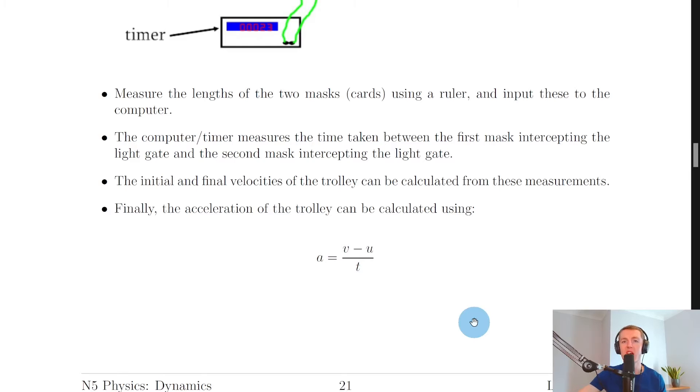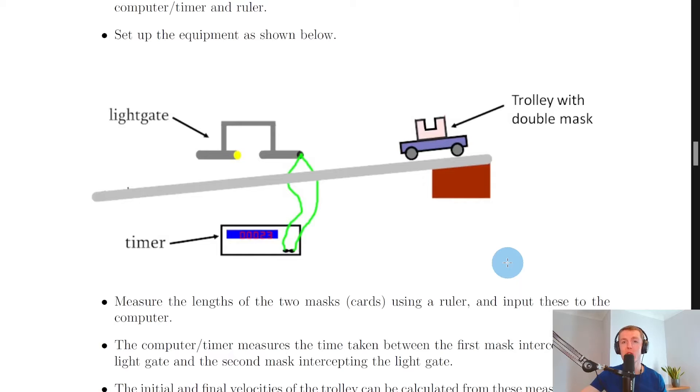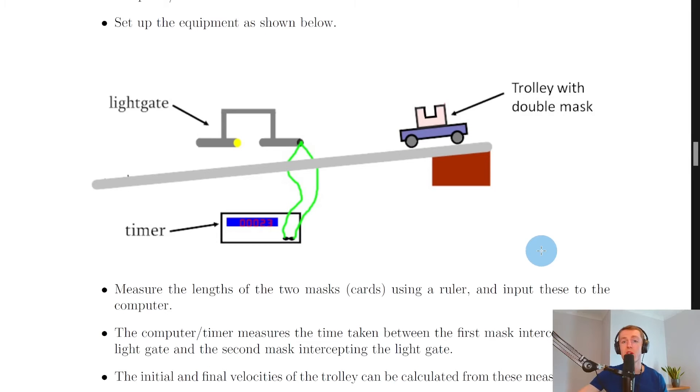However, in order to calculate the initial velocity u and final velocity v to put into this acceleration equation, the timer must also measure two other times. So the first time will be used to find the initial velocity u, and that is by doing a speed distance time equation. So by knowing the length of the first mask and dividing this by the time taken for the front of this mask to this part here of the mask to pass through the light gate, that is going to give you the initial velocity u.